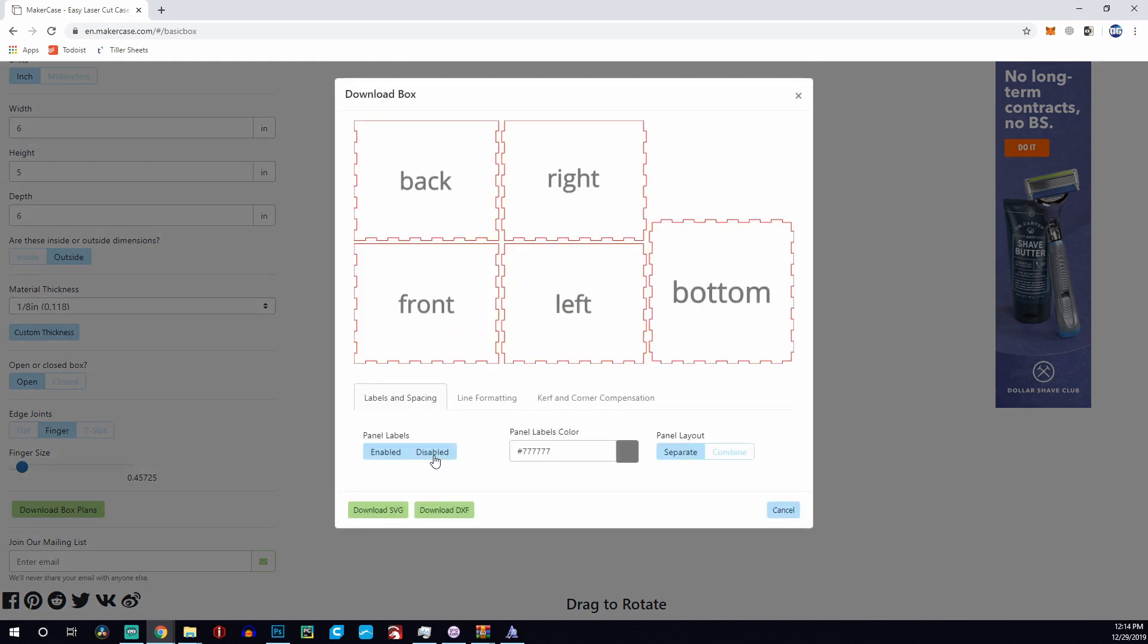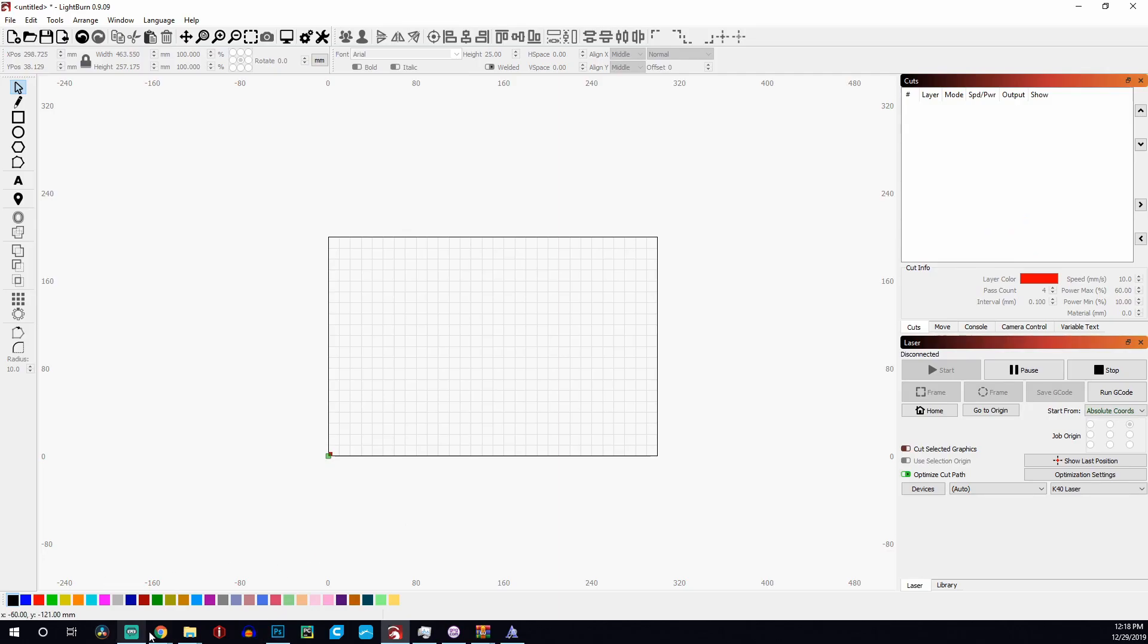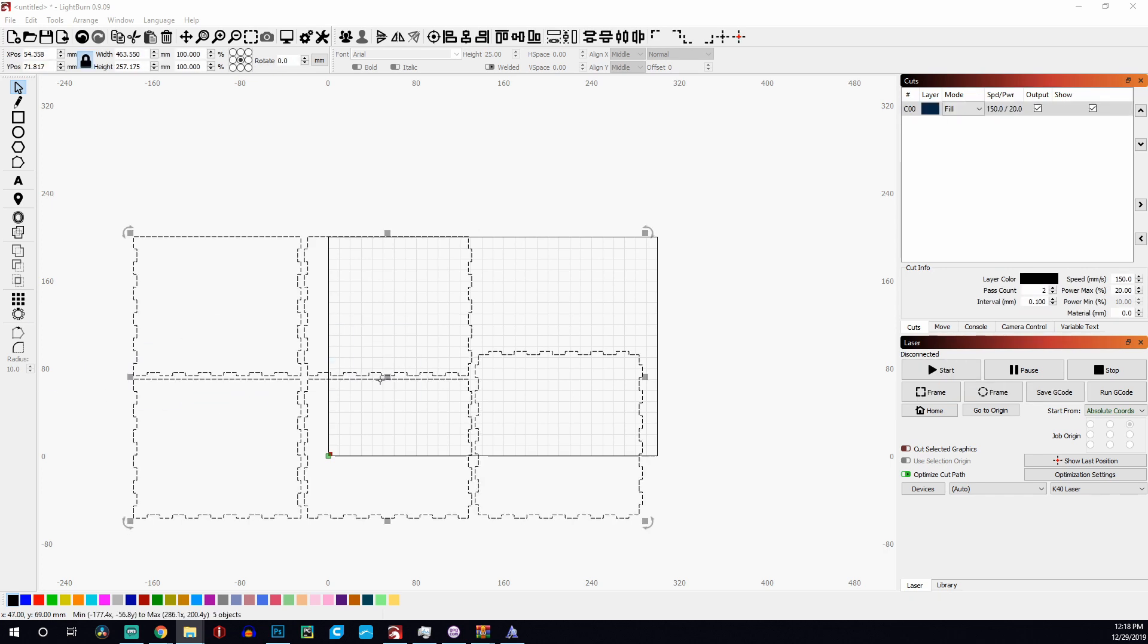So once I was happy with that, I downloaded the box plans. You could have it where it says in text what each of the portions are, but that wasn't needed. And you want to download the DXF file, the SVG file won't let you split them up. So if your laser is not big enough like mine, then that won't work. So if you download the DXF file, then you can go ahead and delete the portions that you aren't going to be cutting at the same time.